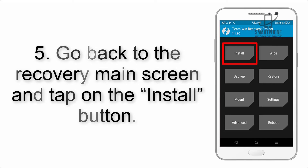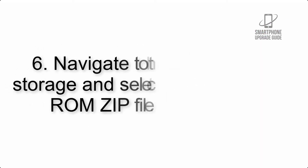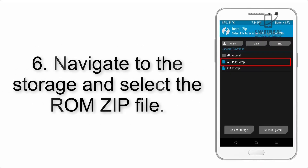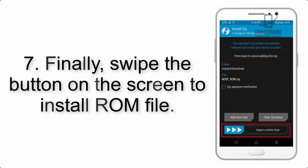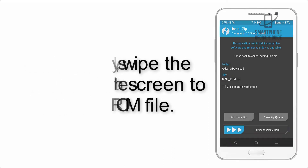Step 5: Go back to the recovery main screen and tap on the Install button. Step 6: Navigate to the storage and select the ROM zip file. Step 7: Finally, swipe the button on the screen to install the ROM file.